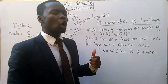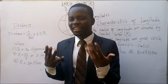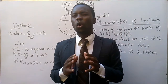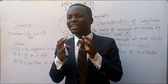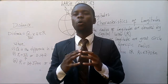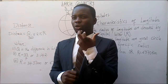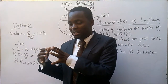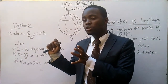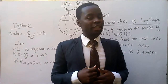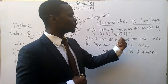The second characteristic is that all longitudes are great circles. A great circle of the Earth is a circle on the surface of the Earth whose radius is equal to that of the Earth. An example of a great circle is the equator, although the equator is a latitude — we won't dwell on that, as we're focused on longitudes. So all lines of longitudes are great circles.